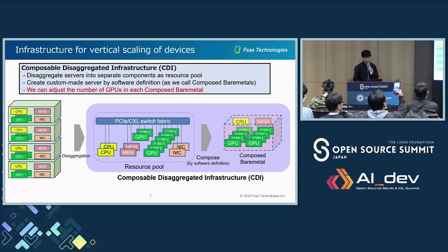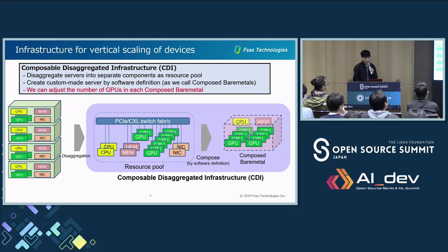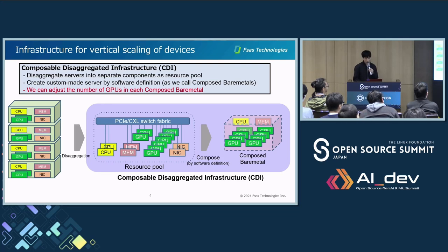As an infrastructure for vertical scaling of devices, composably disaggregated infrastructure has emerged. We call this infrastructure CDI. In a traditional server, hardware resources such as CPUs, memory, and GPUs reside within the server. CDI decomposes these hardware resources and makes them available as a resource pool. We can combine these resources by software definition to create custom-made servers. We call it composite bare metal.